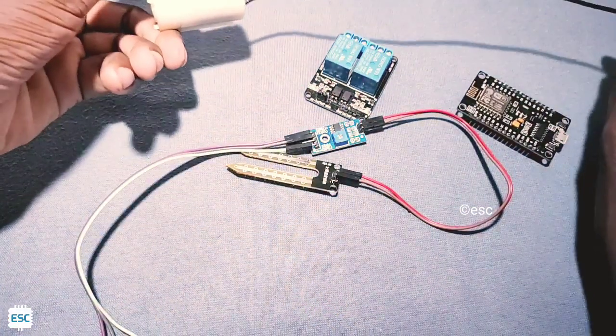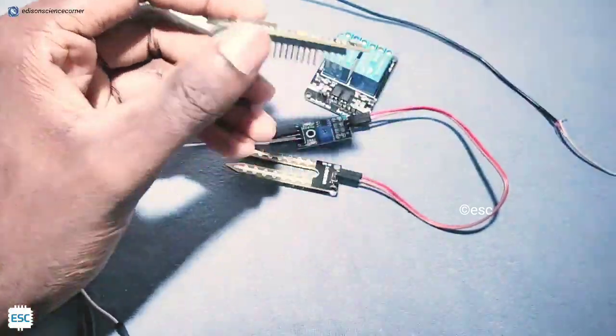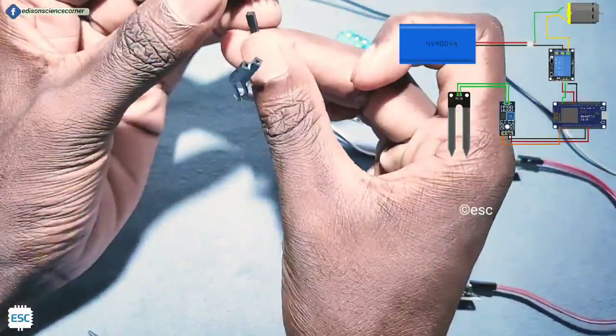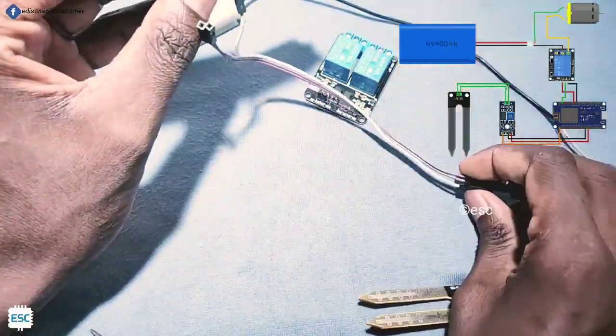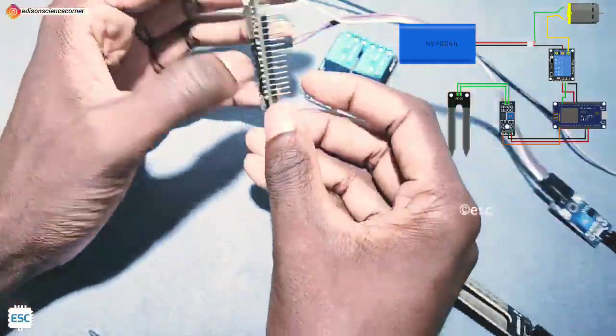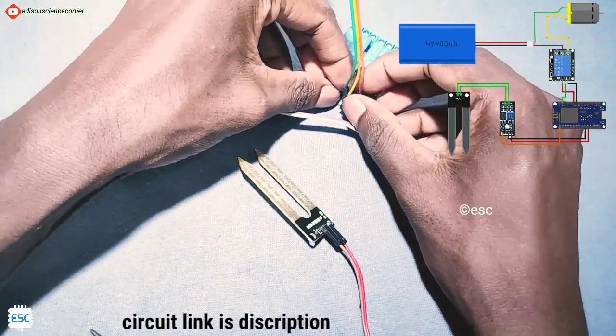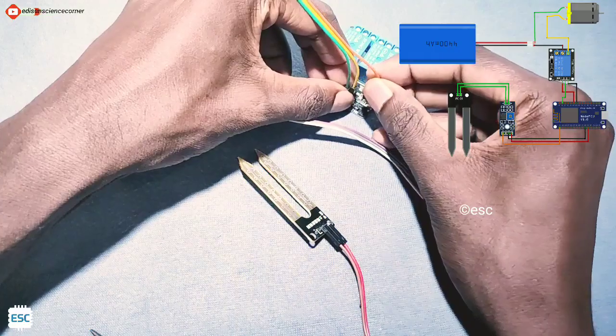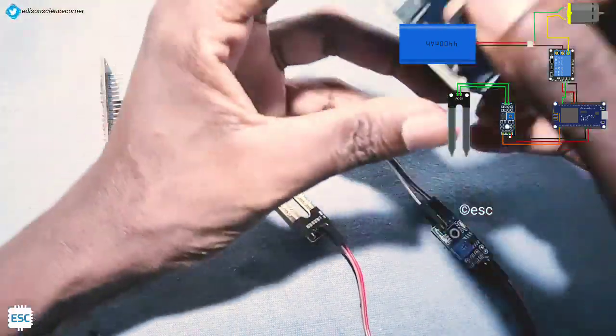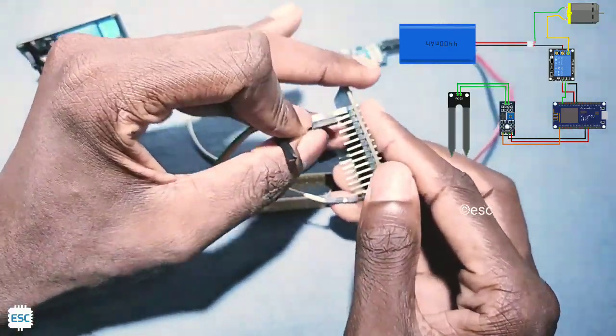Connections are very easy. First let's connect the moisture sensor to NodeMCU: ground to ground, VCC to 3 volt, and analog output to analog input of NodeMCU. Then let's connect the relay module to NodeMCU: VCC to 3 volt, ground to ground, and relay input pin to digital pin one of NodeMCU.